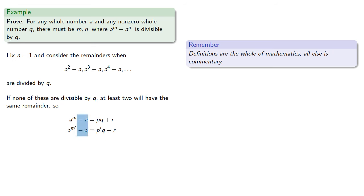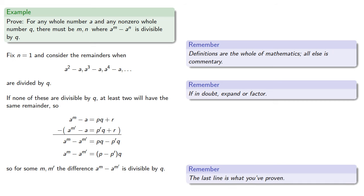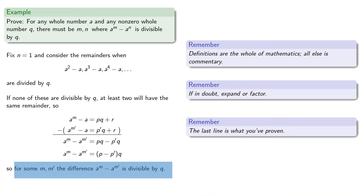Now since both of these have an a and an r in them, it might be helpful to subtract one from the other. And if in doubt, expand or factor. And this means that for some m and m prime, the difference is divisible by q.